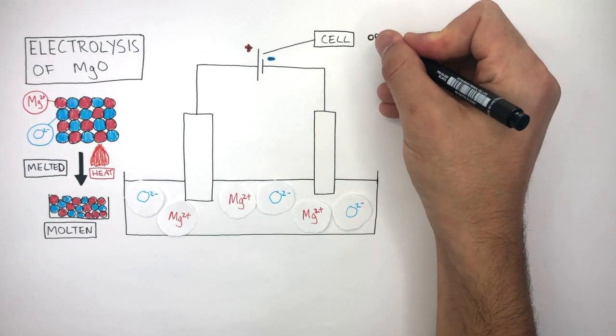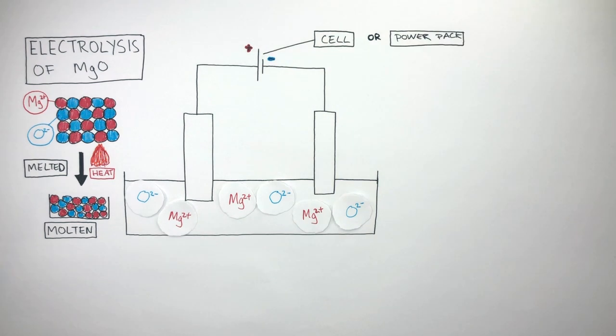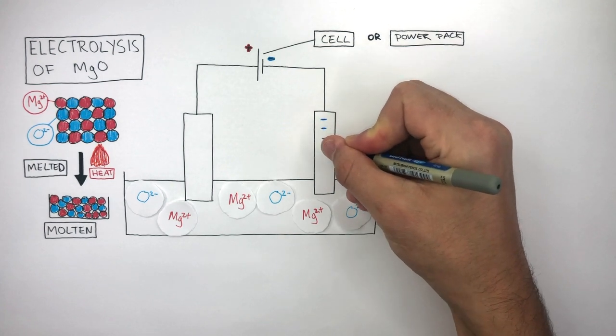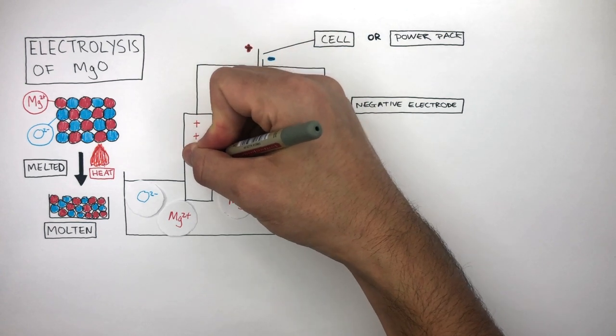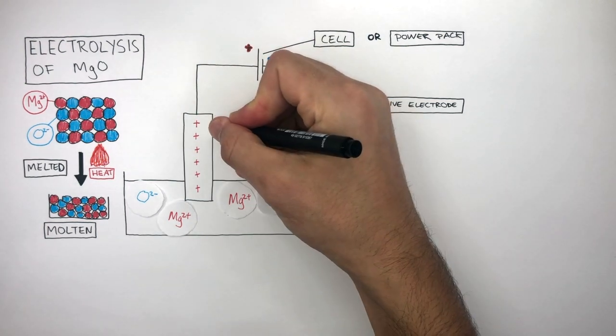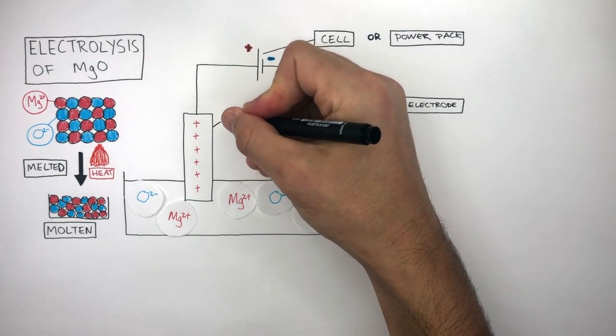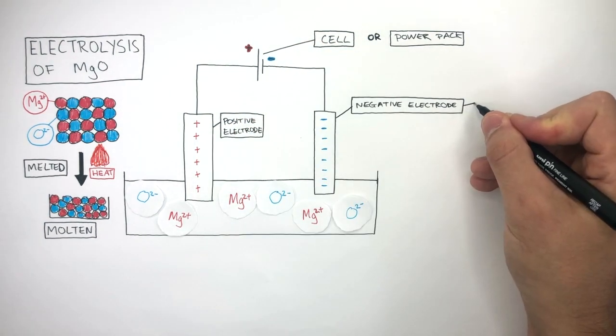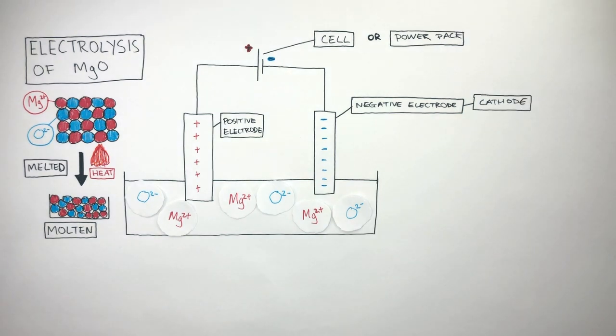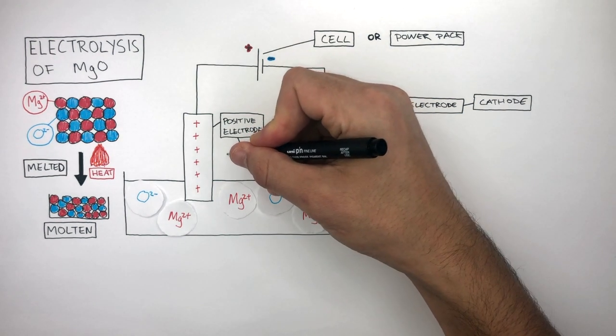This is the cell or power pack and has a direct current. On the left is a positive terminal and on the right is the negative terminal. The negative terminal leads to the negative electrode so here I'm drawing negative signs. Here I'm drawing positive signs as the electrode is connected to the positive terminal of the cell. This is the positive electrode. The negative electrode is known as the cathode and the positive electrode is known as the anode.